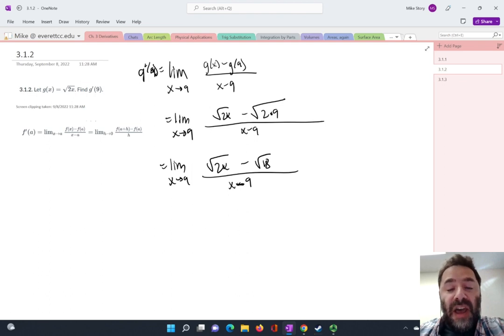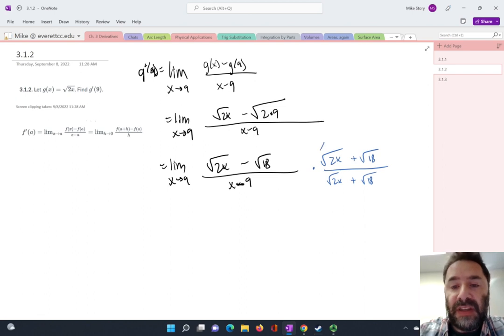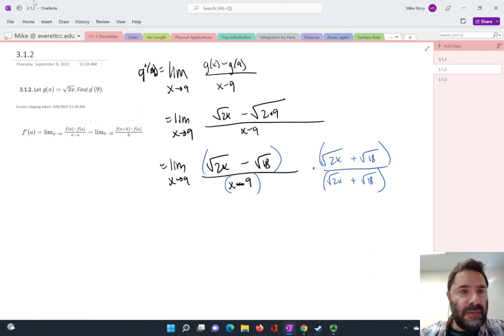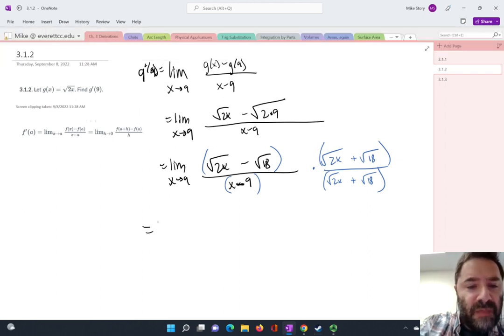What now? Wow. So here I'm going to multiply the top and the bottom of this limit by the conjugate, which is occasionally sometimes helpful to do. And in this case, it is helpful to do. So I'm multiplying the numerator and the denominator by square root of 2x plus square root of 18. I remember talking about multiplying by the conjugate in a previous video. And here I am doing it again.